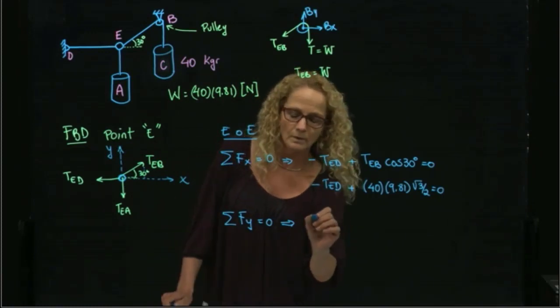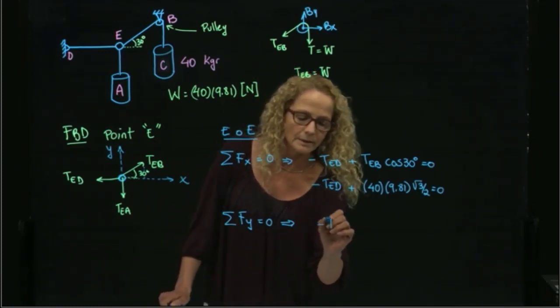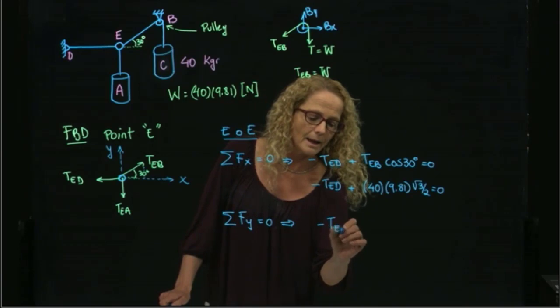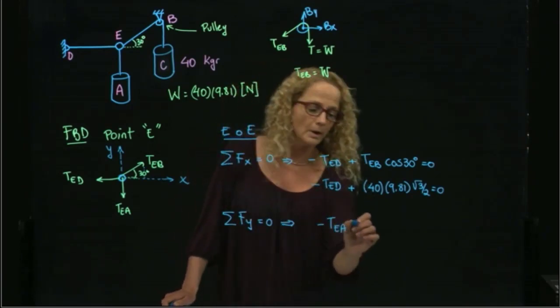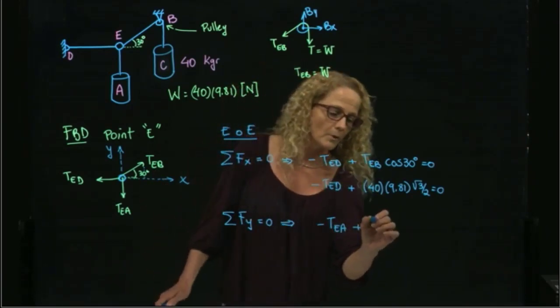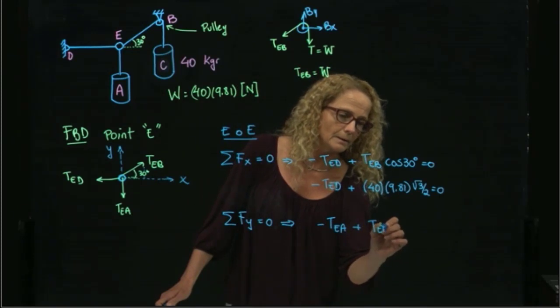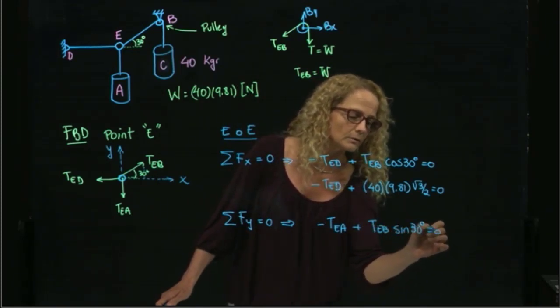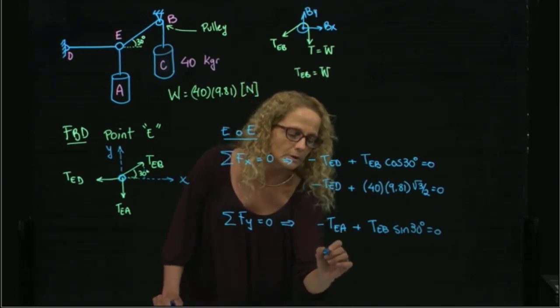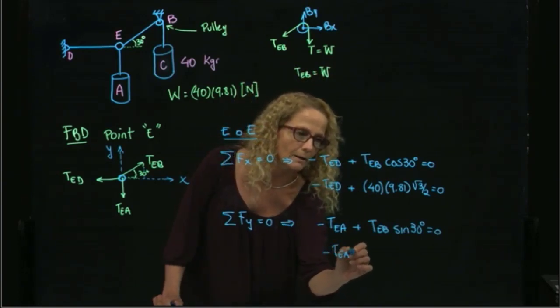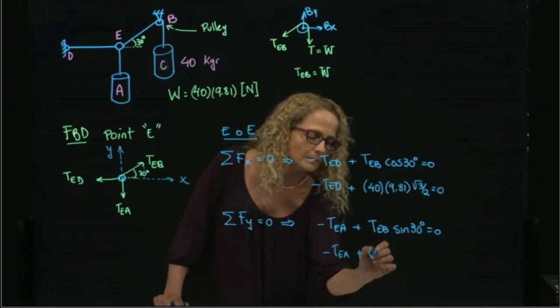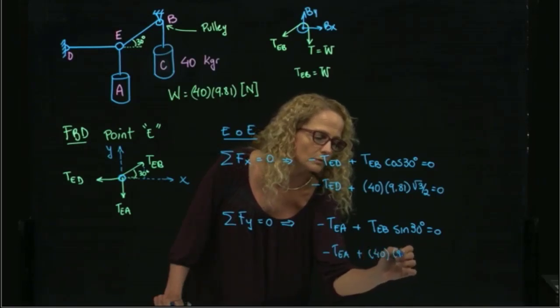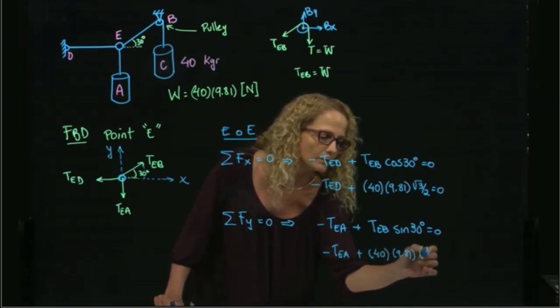So it will be negative T Eb plus positive, right, T Eb sine of 30 degrees equals to zero. So that will be negative T Eb plus the same, we have that this is equal to the weight, and the sine of 30 is one half.